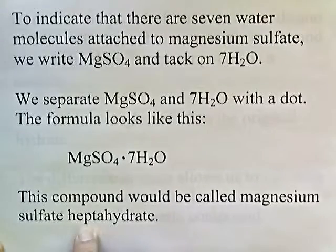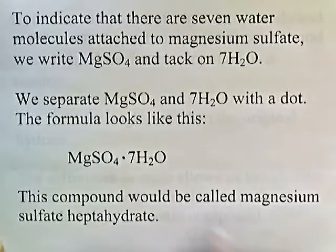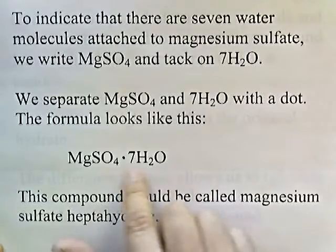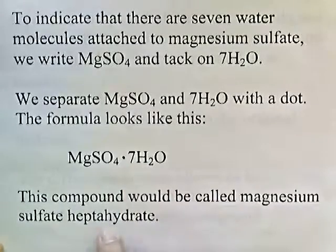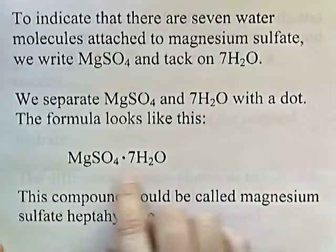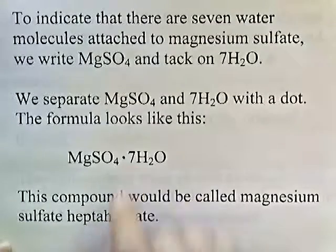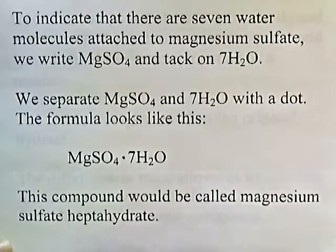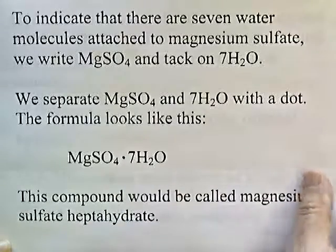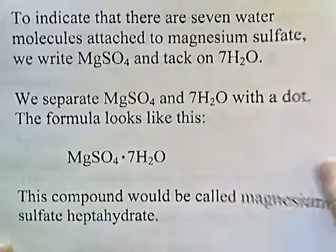The hepta prefix means seven. If there were say three waters then it would be trihydrate, and if there were two waters it would be dihydrate. If there were six waters it would be hexahydrate. So the prefix tells you the number of water molecules that are attached.